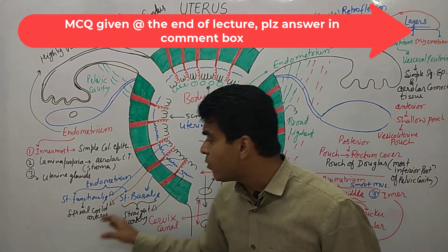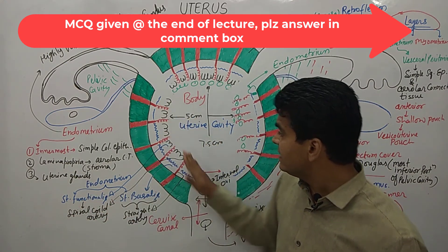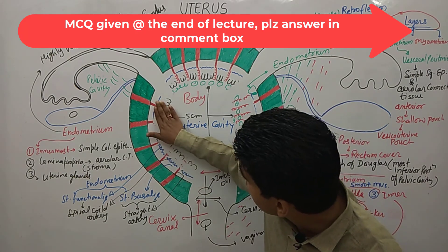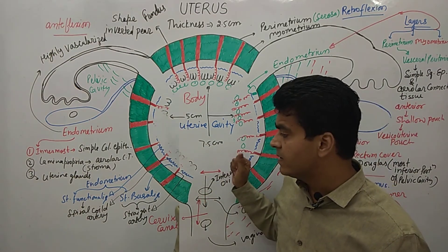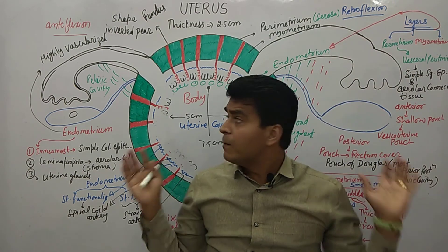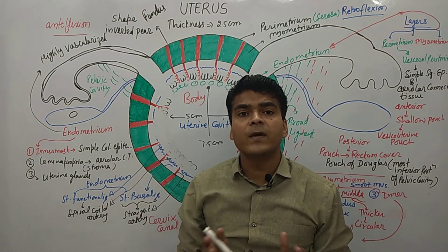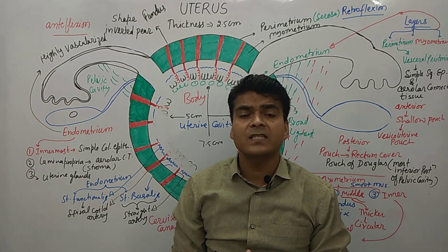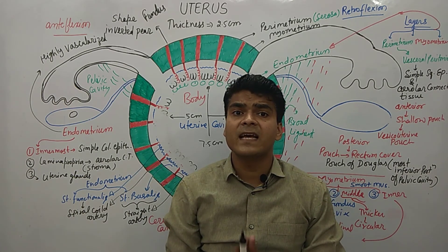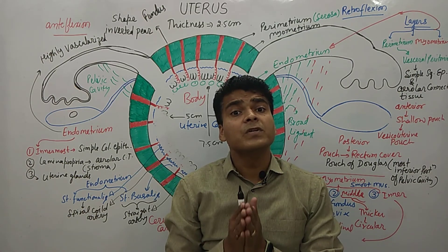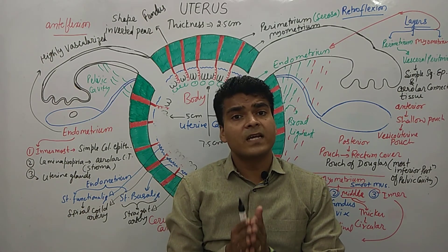During the menstrual cycle, the spiral coiled arteries slough off. I hope you understood the uterus. If you have any questions, discuss them in the comment box. If you found this lecture useful, please share, like, and subscribe.